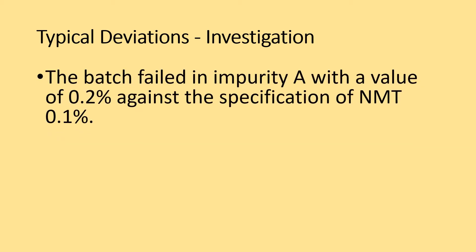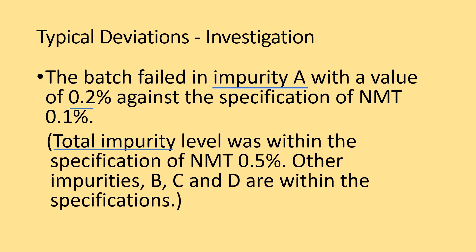One example is a batch that failed in impurity A with a value of 0.2% against the specification of not more than 0.1%. The initial review of the data generated indicated that the total impurity level was within the specification of not more than 0.5%. Other impurities B, C, and D are within the specification of not more than 0.5%.